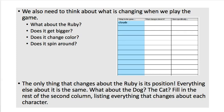Now look at the second column in your workbook. What is changing when we play the game? How does the Ruby change? Does it get bigger? Does it change color? Does it spin? No. The only thing that changes about the Ruby is its position. Everything else was the same. Fill in the rest of the second column with what changed about the dog and the cat and the clouds and everything else you listed in the first column. Pause the video and do that now.